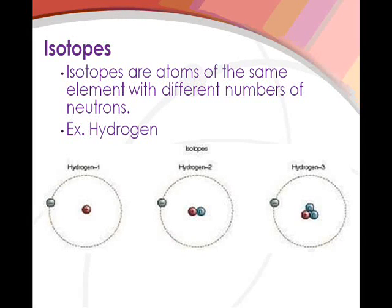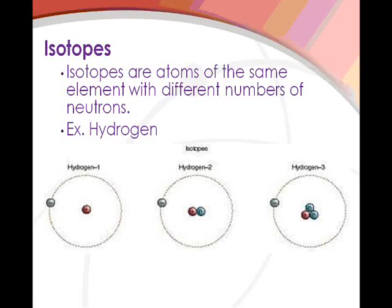Look at hydrogen 1 — it has 1 proton and no neutrons. Hydrogen 2 has 1 proton and 1 neutron. Since we added a neutron, that's why there's an increase in mass. Hydrogen 3 has 1 proton and 2 neutrons, and since we have 2 neutrons, that's increasing the mass again.